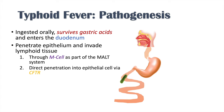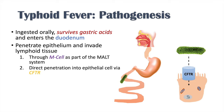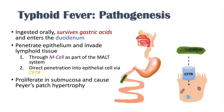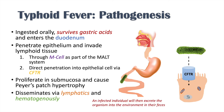CFTR is the chloride ion channel that is mutated in patients with cystic fibrosis. Salmonella typhi and paratyphi hijack this channel to enter intestinal epithelial cells. Because this channel is mutated in cystic fibrosis patients, they may actually be protected against typhoid fever infections — very interesting. Once the bacteria penetrate into the epithelium, they proliferate in the submucosa causing Peyer's patch hypertrophy, and eventually disseminate through the body via the lymphatic system and hematogenously through the blood.